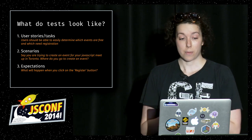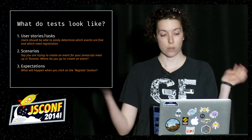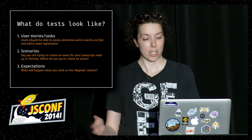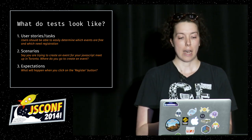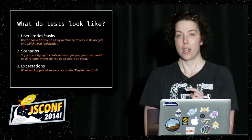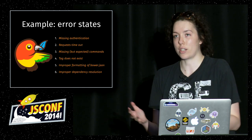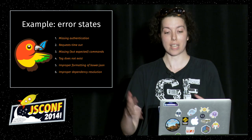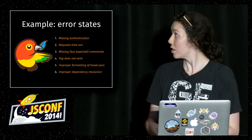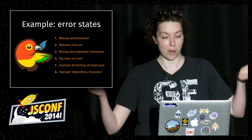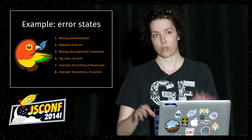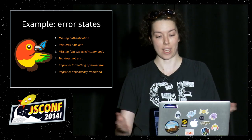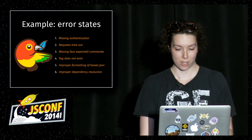These are some examples of what tests look like — user stories, scenarios where you have users pretend they're doing something, and expectations like what will happen when you click on something. Expectations are particularly relevant to library developers in the case of error states. Even if you're not doing front-facing UI, you can run user testing on developers to see if, when they get an error state, they understand what the error is. You could run the error, have the user complete some actions, and ask them what they think happened. Did they actually understand what the error was saying?